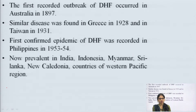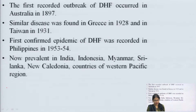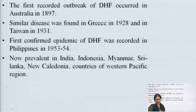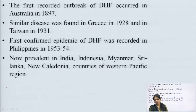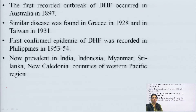A similar disease was found in Greece in 1928. Dengue is transmitted by infected female mosquitoes, primarily daytime feeders that live around human habitations. They lay eggs and produce larvae preferentially in artificial containers. Dengue is also known as yellow fever. The first confirmed epidemic of Dengue hemorrhagic fever (DHF) was recorded in the Philippines in 1953–54.